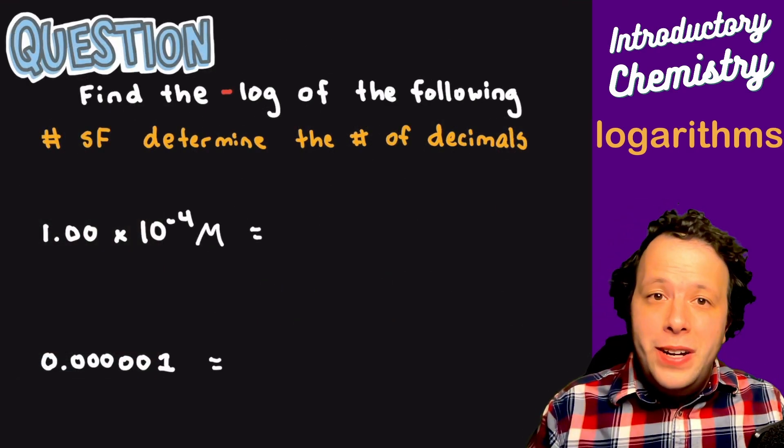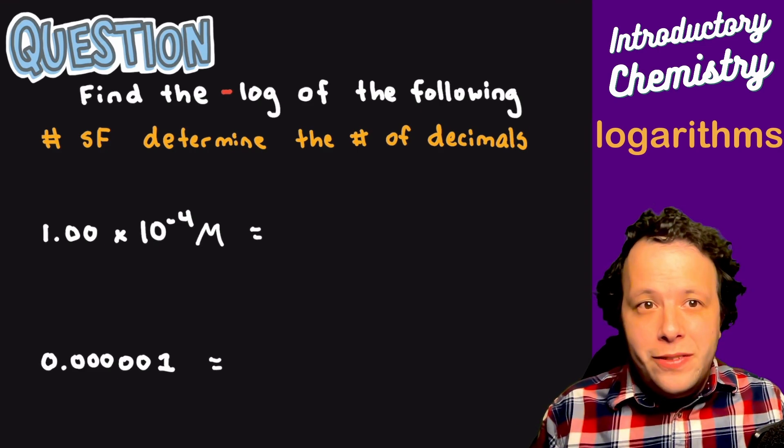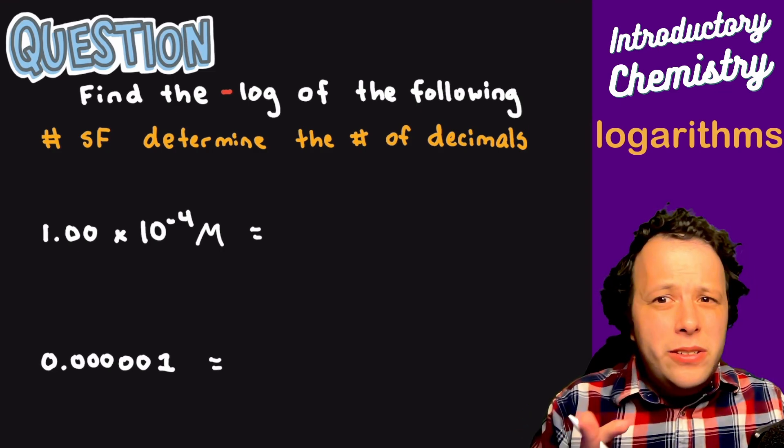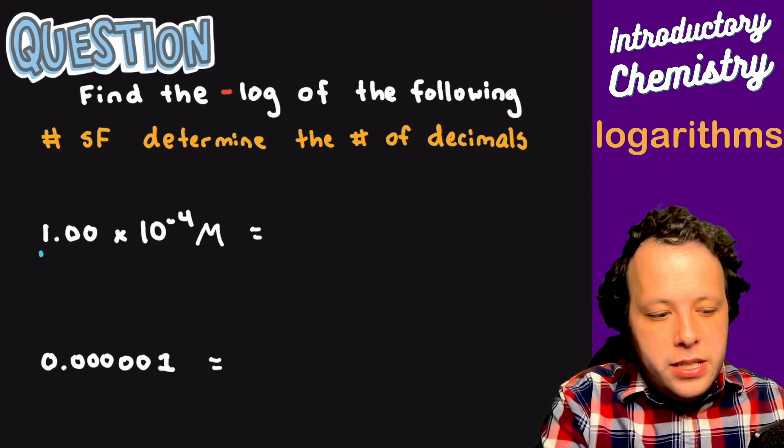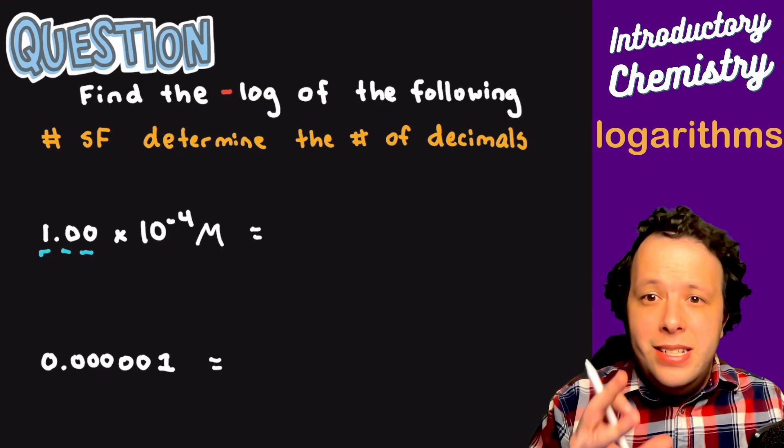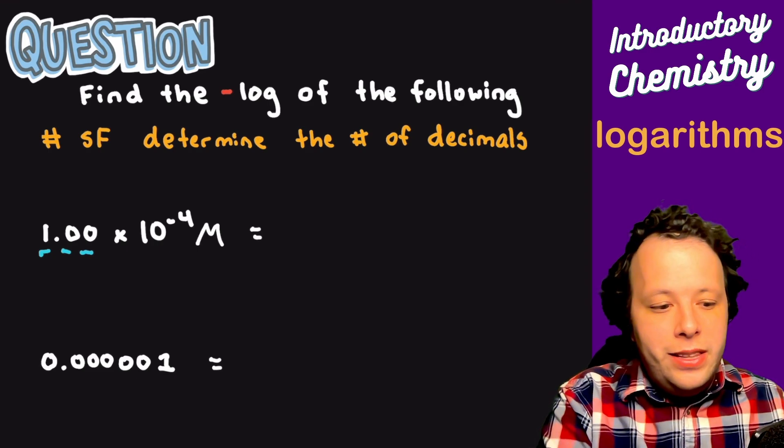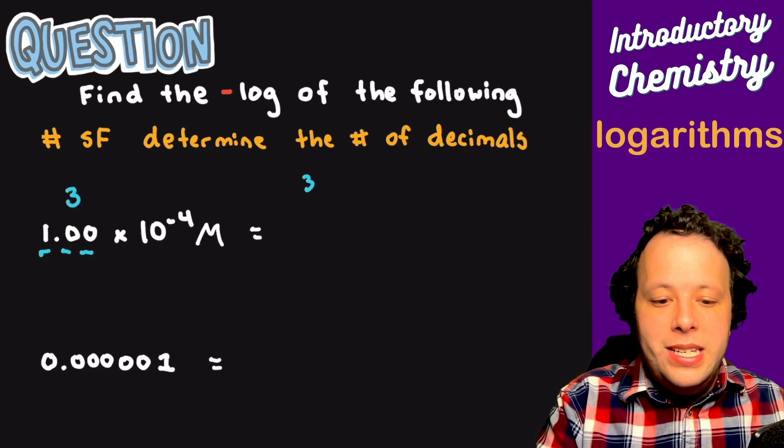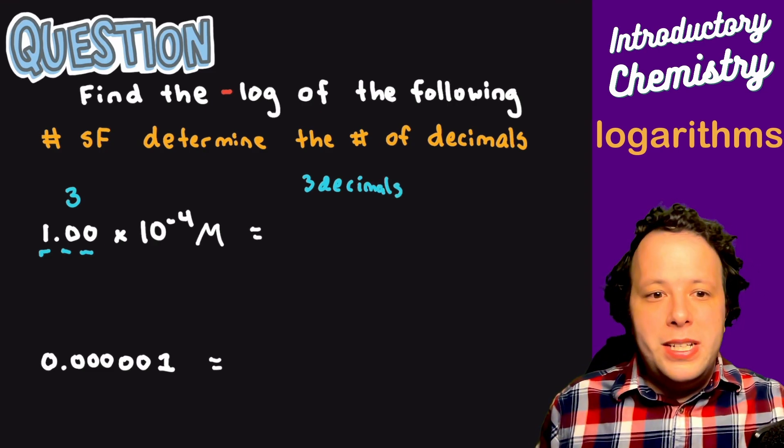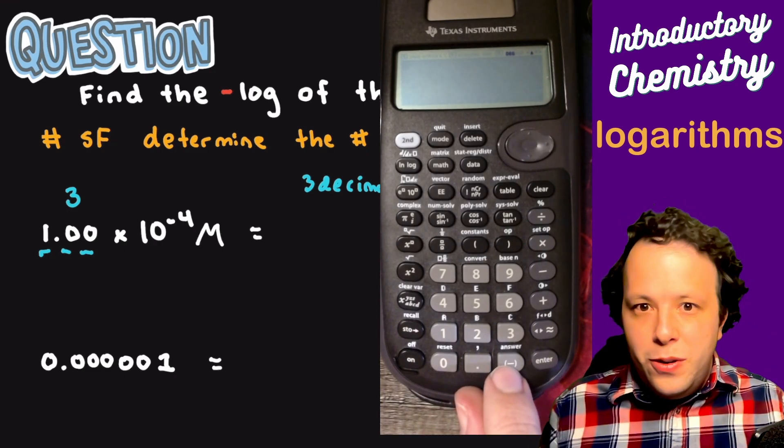With our first example, we're going to find the negative log of the following numbers and determine our sig figs. When we are doing these, sig figs are a little different when it's talking about logs. The whole idea is you count the number of sig figs you have, and that's going to represent how many decimal places you have in your pH value. So we have three on the left-hand side, so that means you're going to have three decimals on this pH.